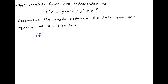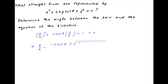We start by dividing the given equation by x squared. It can therefore be written as (y/x)² + 2 cot θ times (y/x) + 1 = 0. This is a quadratic in y/x. Solving, we get y/x = (−2 cot θ ± √(4 cot²θ − 4)) / 2.